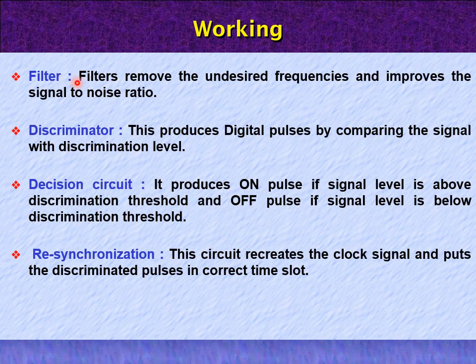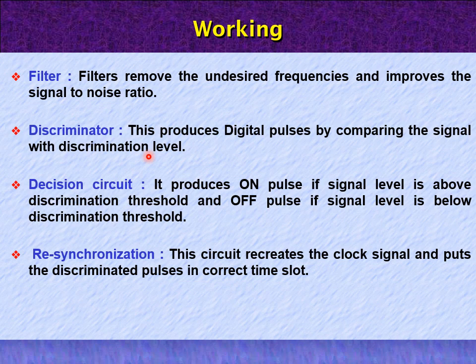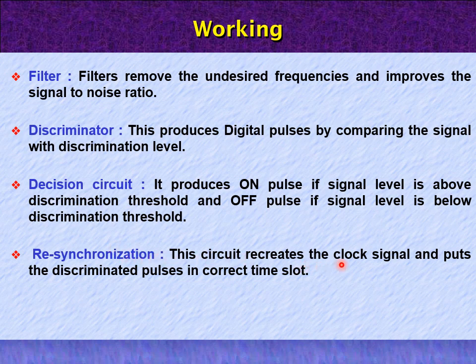Then it goes to the filters. Filters are used to remove undesirable frequencies and improve the signal-to-noise ratio. The discriminator produces digital pulses by comparing the signal with a discrimination level. The decision circuit produces an on-pulse if the signal level is above the discrimination threshold, and an off-pulse if it is below. In resynchronization, a circuit recreates the clock signal and puts the discriminated pulses in the correct time slot.